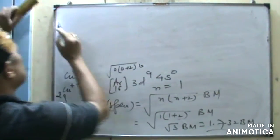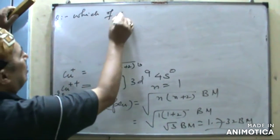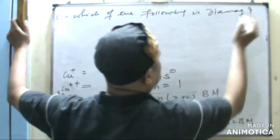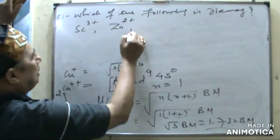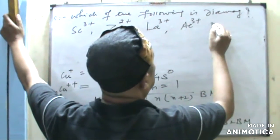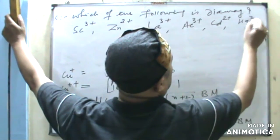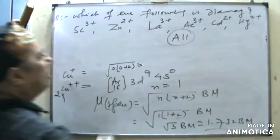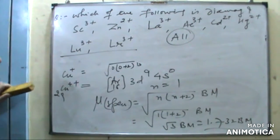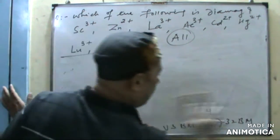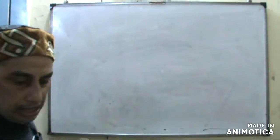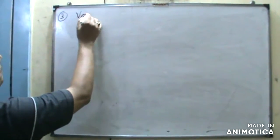For example, if a question asks which of the following is diamagnetic — Sc3+, Zn2+, Lu3+ (lutetium), Lr3+ (lawrencium) — all of these have no unpaired electrons. Cadmium 2+ and mercury 2+ also have no unpaired electrons. Even lutetium 3+ and lawrencium 3+ have no unpaired electrons, so they are all diamagnetic.